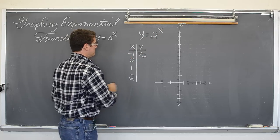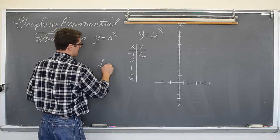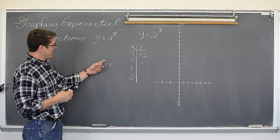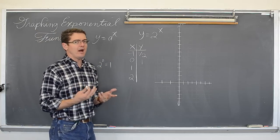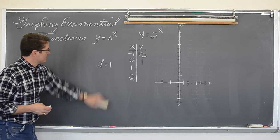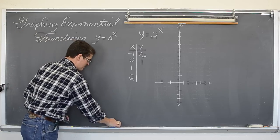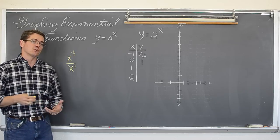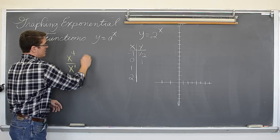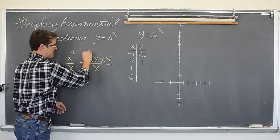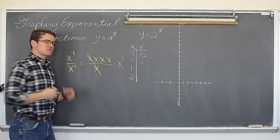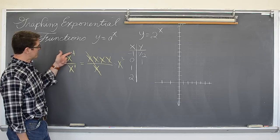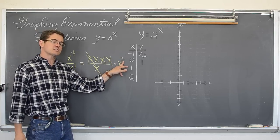Two to the zero power: anything to the zero power is equal to one. Let me go off on a tangent and explain why. Let's take a look at x to the fourth divided by x to the first. We know that as four x's on top and one x on the bottom, that cancels out giving me x to the third. So when we divide like bases we subtract the exponents — x to the fourth divided by x to the first is x to the four minus one, which is three.